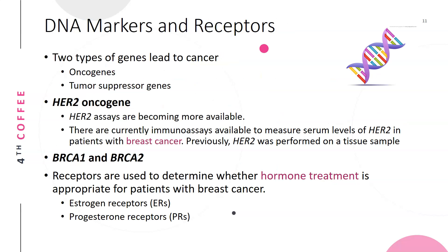Regarding DNA markers and receptors: there are two types of genes that lead to cancer — oncogenes and tumor suppressor genes. If oncogenes are turned on, that can lead to cancer; if tumor suppressor genes are turned off, that can also lead to cancer.